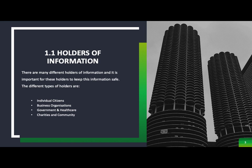There are loads of different holders of information that you need to know. The first one is individual citizens, who can hold information such as phone numbers, addresses, and bank details. Business organizations can hold information about weekly and monthly forecast sales and other businesses' addresses. Governments and healthcare, such as the NHS, can hold information about their employees and patients. Charities and communities also hold information — if you donate money to a charity, you'll need to give them your details so they know where the money's come from.